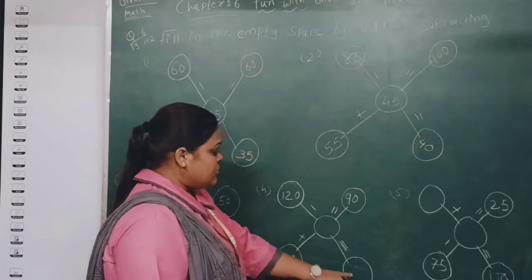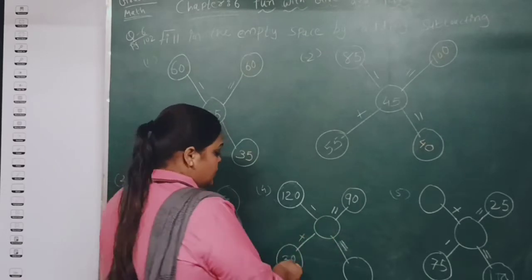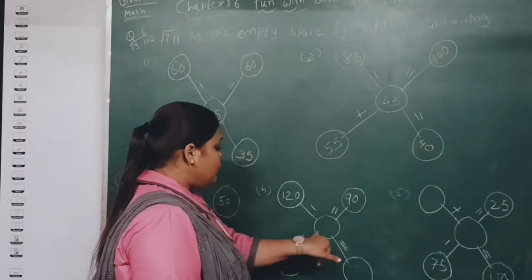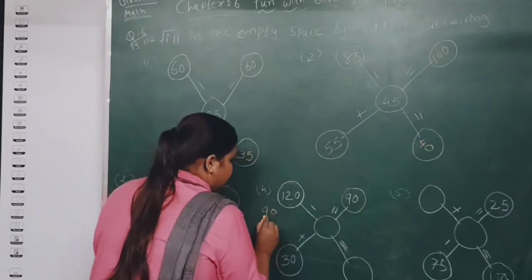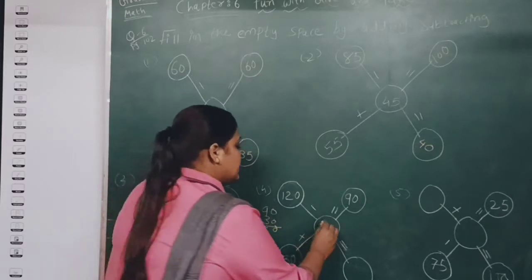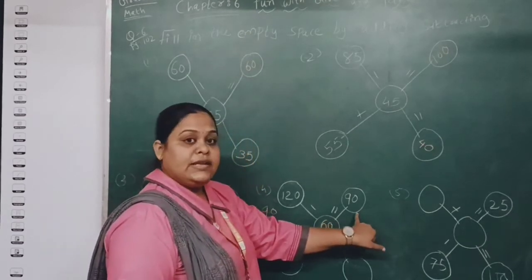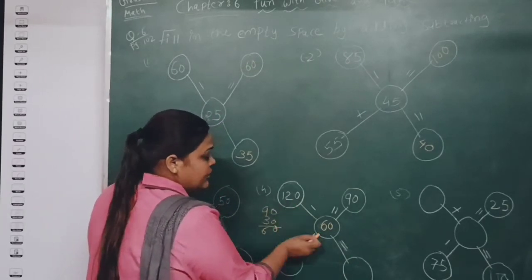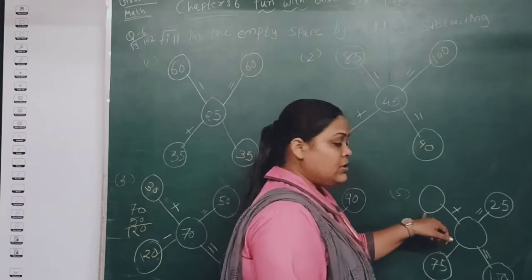Next: 120 minus empty box, and here also an empty box. First we find: 30 plus blank equals 90. So 90 minus 30 equals 60. We write 60 here. So 30 plus 60 is 90 — our answer is correct. Now simply 120 minus 60 gives 60 as the answer.